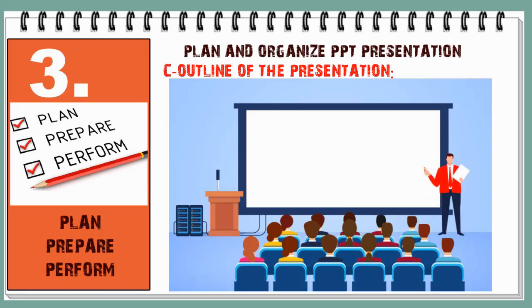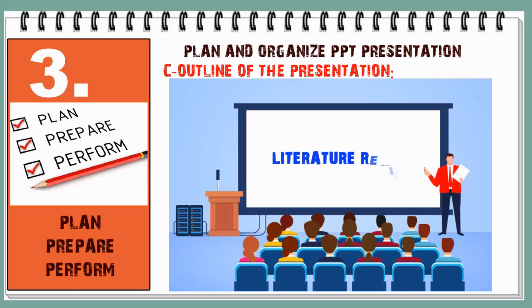Number 6: Aim, objectives, and the scope of the study. Mention them as bulleted points or as notes. State your aim and your objectives and what is the scope of your study.